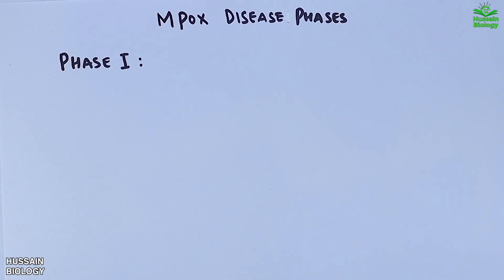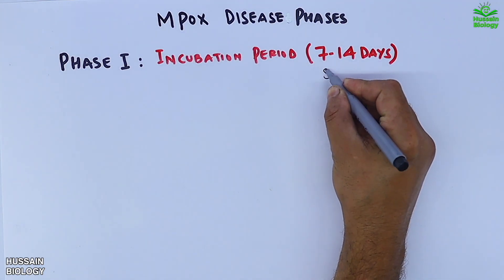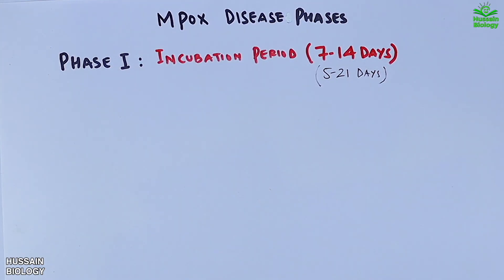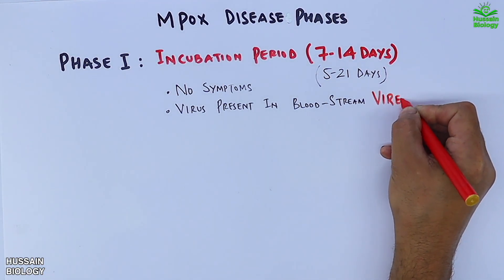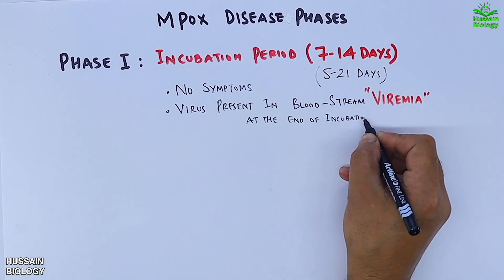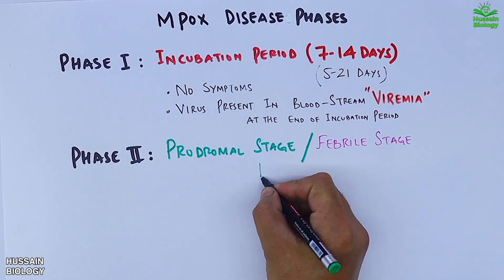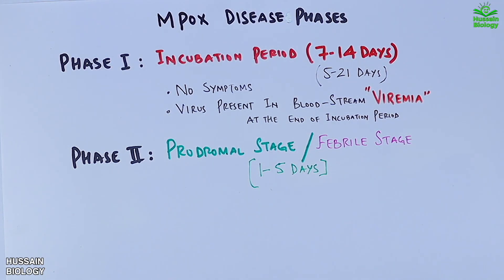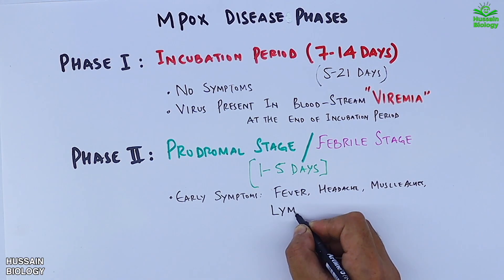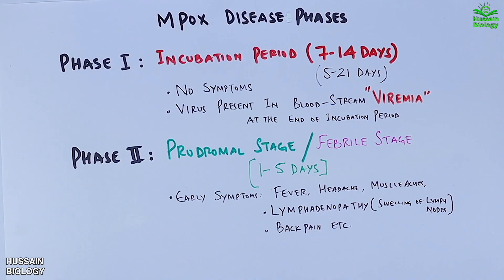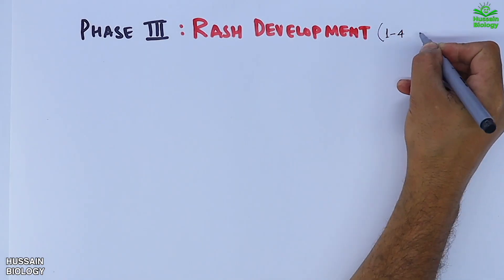The first phase is the incubation phase, which ranges from 7 to 14 days in general but can extend up to 21 days. In this phase there are no symptoms; the virus is present in the blood, called viremia. The second phase is the prodromal or febrile stage, lasting one to five days, during which early symptoms occur: fever, headache, muscle ache, lymphadenopathy (swelling of lymph nodes), and back pain.